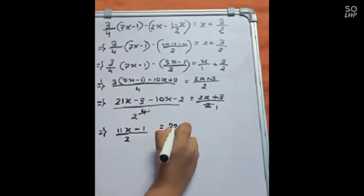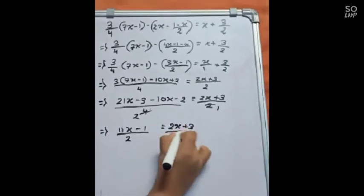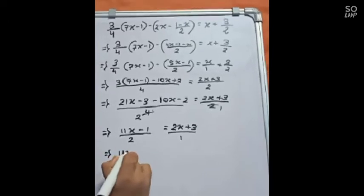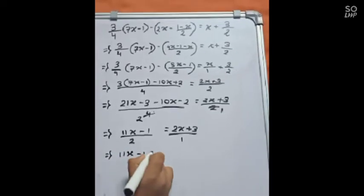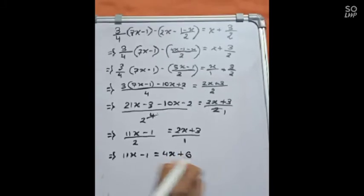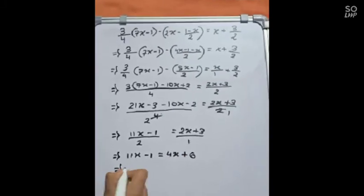Equals to (2x+3)/1. 11x minus 1 equals to 4x plus 6. We are multiplying 2 and 3 and 2.